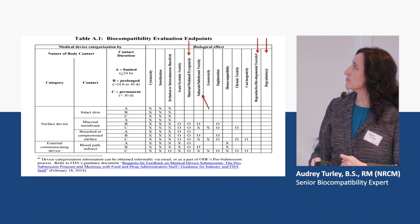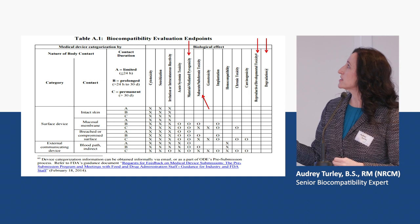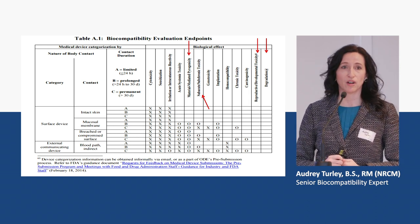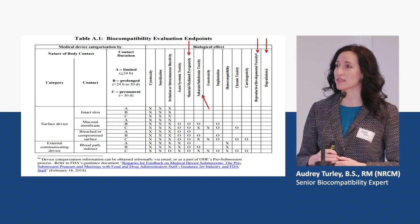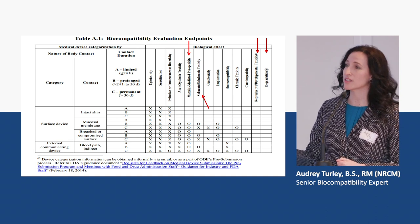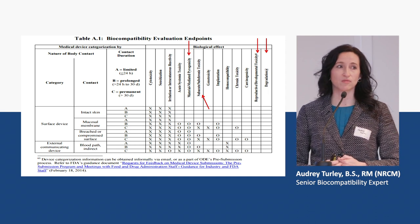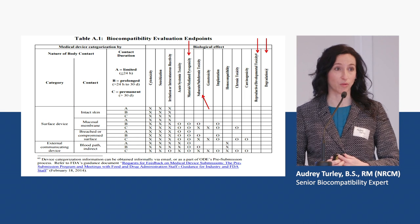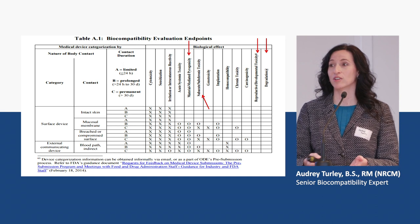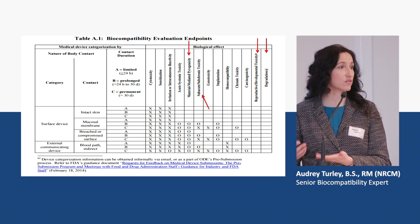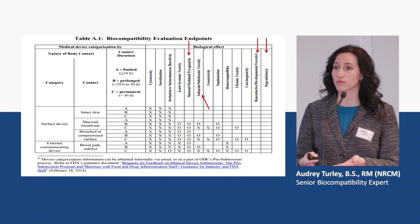This is the FDA table, and I want to point out the differences. The FDA has also added a material-mediated pyrogen column in their guidance document, which adds consistency. However, the FDA has continued to keep subacute and subchronic in the same column, so the expectation is that you will address both endpoints. If ISO says only subacute and the FDA says subacute and subchronic, you'll want to test to the higher expectation.